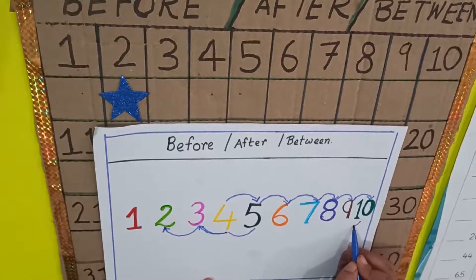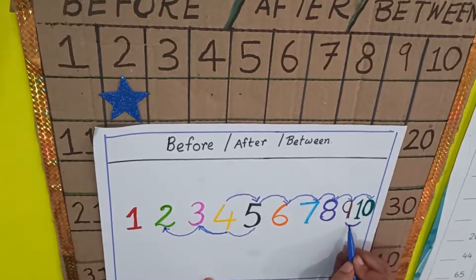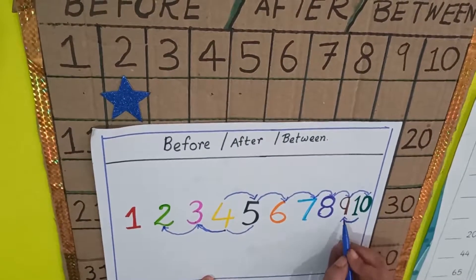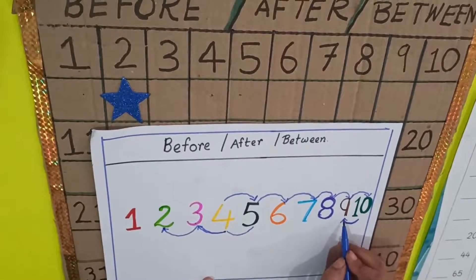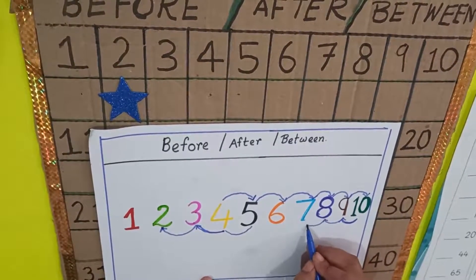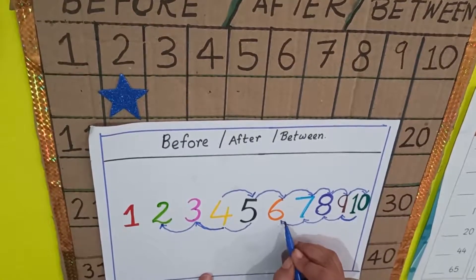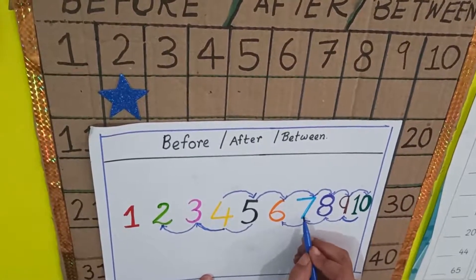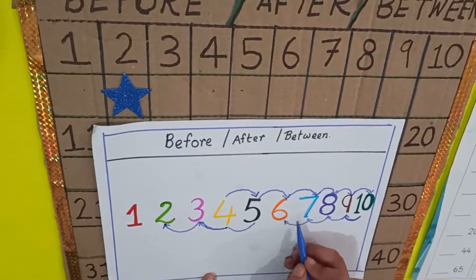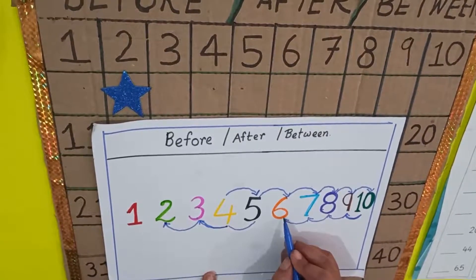Who is before number ten? Look here — nine, brown color. And who is before nine? You know what is before and what is after. What is before seven? Six. What is before six? Five.